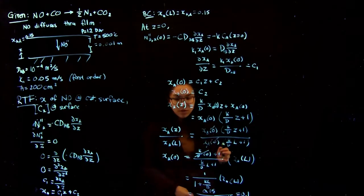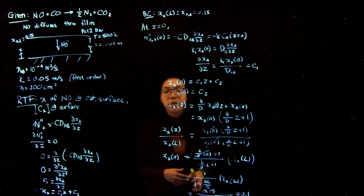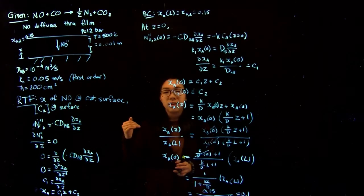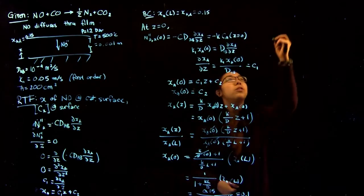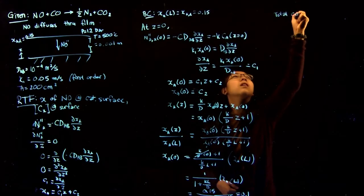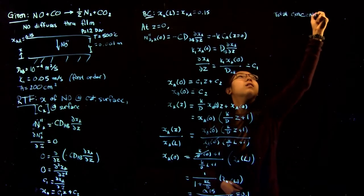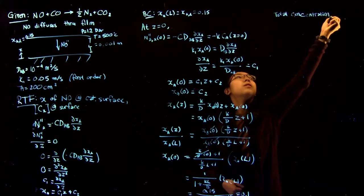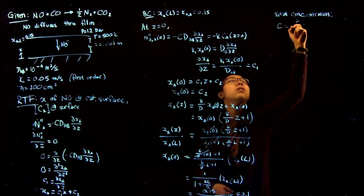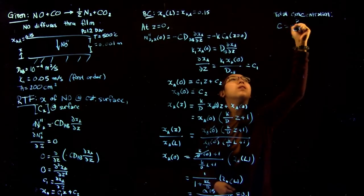So the next thing we want to do is find the actual concentration of NO at the catalytic surface. So in order to do that, we just need to find the total concentration, which as we know from the ideal gas law, is C is equal to the pressure over RT.